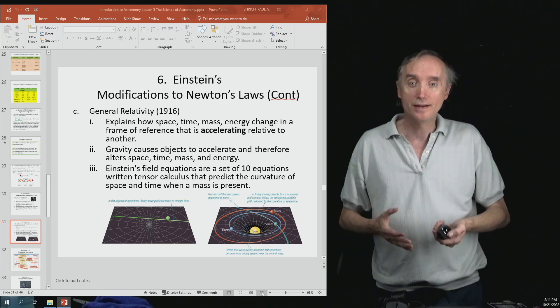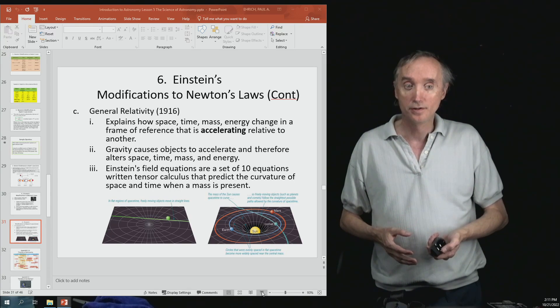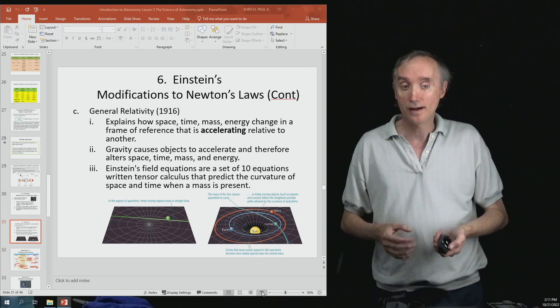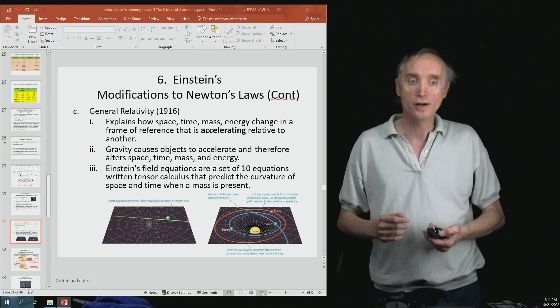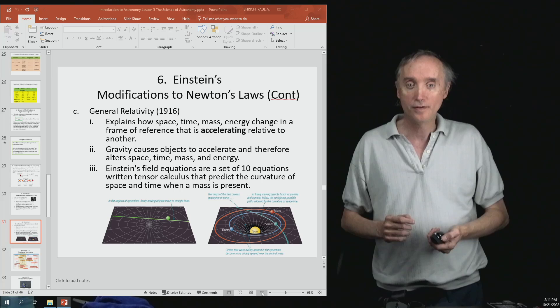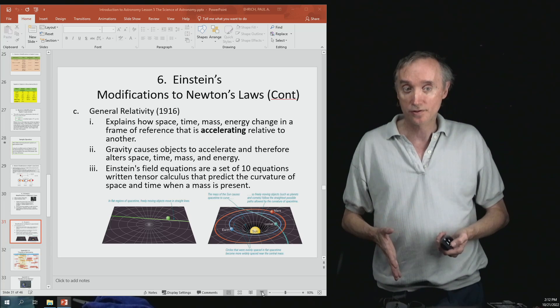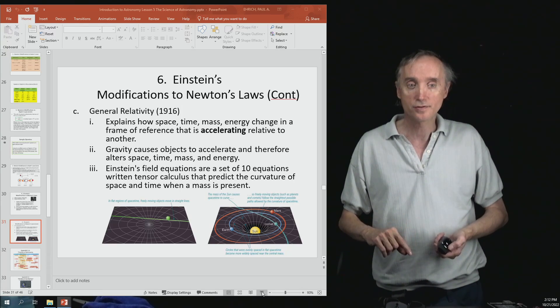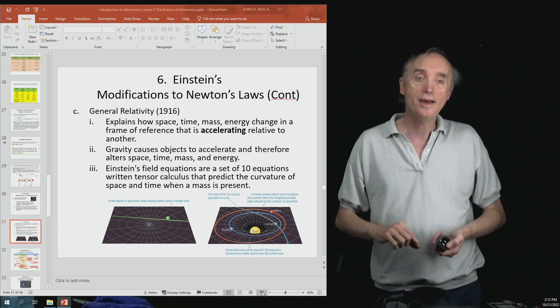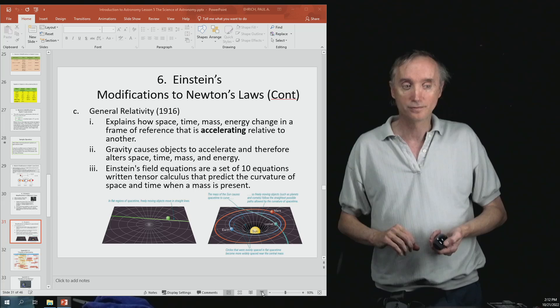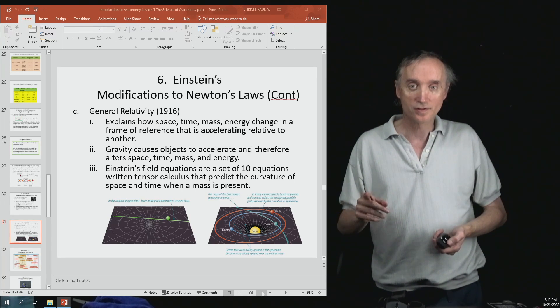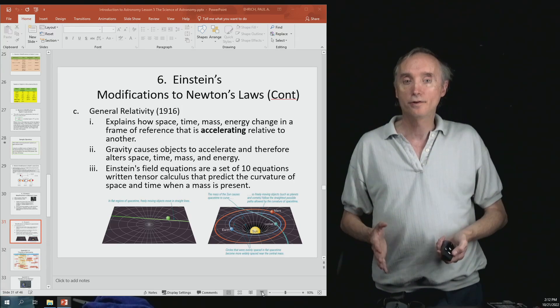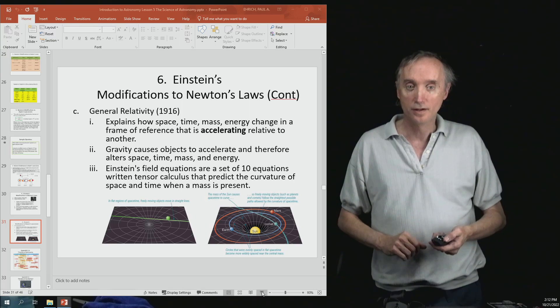He came up with a set of ten equations—they're called the field equations—written in terms of calculus. You have to solve all ten equations at the same time. It's bad enough having two equations and two unknowns in algebra, but this would be ten equations and ten unknowns, and you have to use calculus to understand them. You have to use multiple dimensions, something called tensor calculus. It's very complicated. I won't even show you that, but if you go to the internet and type in Einstein's field equations, you can see examples of them.